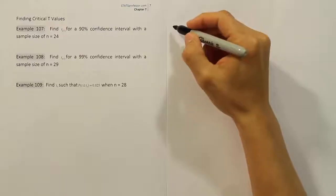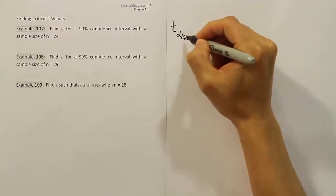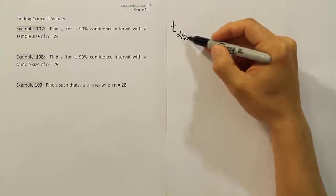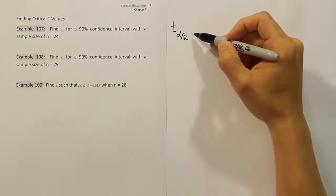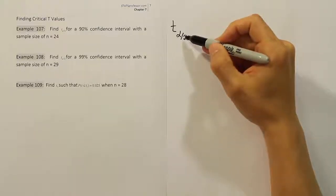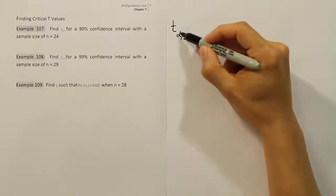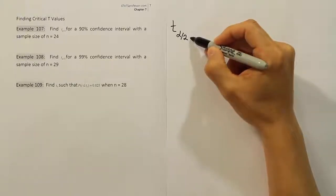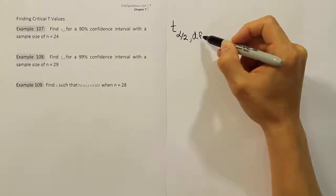When finding a critical t-value, use the notation to your advantage. The t alpha divided by 2 notation tells you what you need to do — divide your alpha in half and look it up on the t-table. One key thing to remember is that t values have something called degrees of freedom, so we use the notation t alpha divided by 2, comma df, where df stands for degrees of freedom.